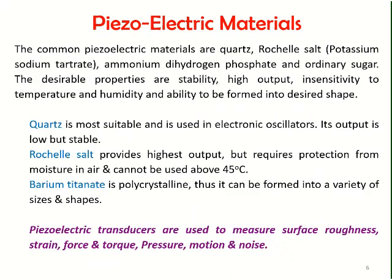The most common piezoelectric material used is quartz. Other options include rock salt, potassium sodium tartrate, ammonium dihydrogen phosphate, and even ordinary sugar is also a piezoelectric material. Quartz is the most suitable for electronic oscillators because its output is low but stable. Rock salt provides the highest output but requires protection from moisture. Barium titanate is a polycrystalline material that can be formed into any type, shape, and size of piezoelectric material.